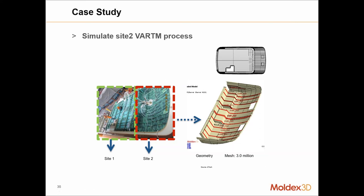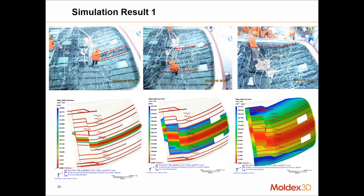Simulation results are compared to actual results. In the top three images, the red line indicates flow front progression of the resin as it is injected into the mat. Although this is a very large part and slightly difficult to see, the simulation does correlate and match pretty well with the actual flow front progression of the resin during this vacuum-assisted RTM process.